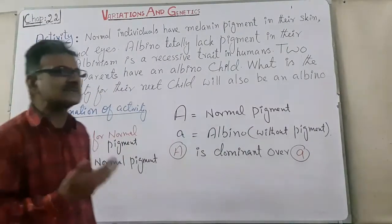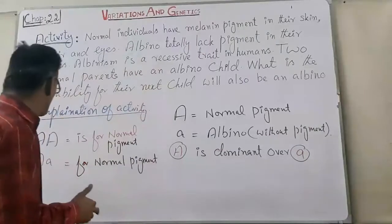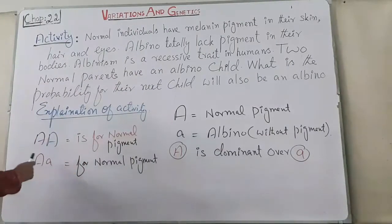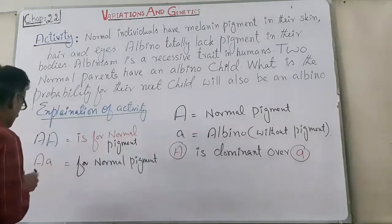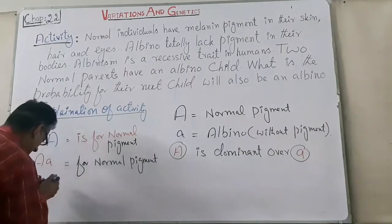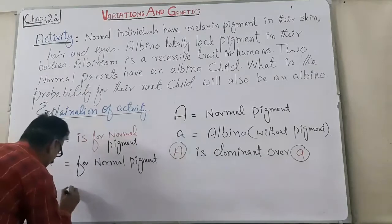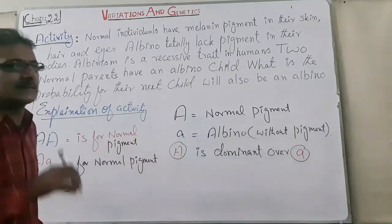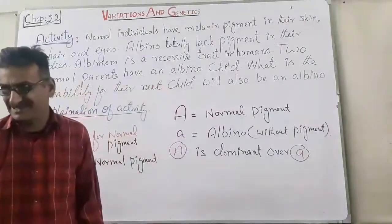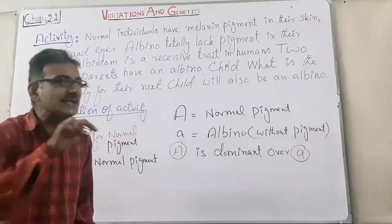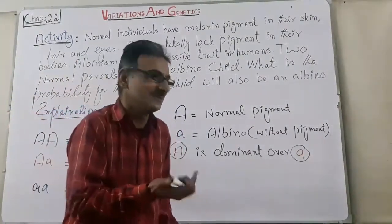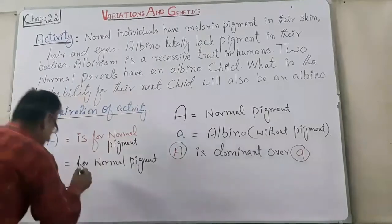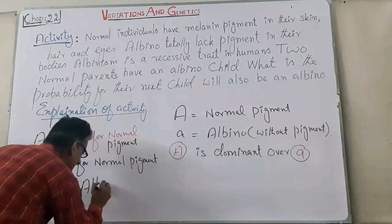Because dominance is complete, the small a allele will be masked by capital A, and so normal pigment is present in the individual. If the genotype is small a small a, this is homozygous recessive. If two recessive alleles are present in an individual, the individual will be albino.